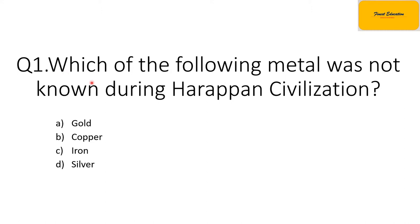The first question is: which of the following matter was not known during the Harappan Civilization? The options are option A, gold; option B, copper; option C, iron; or option D, silver. The correct answer is option C, that is iron.